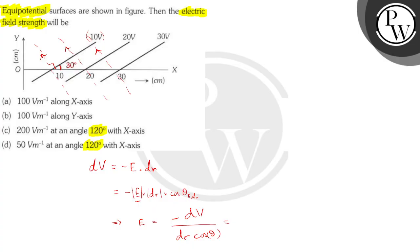So we have minus dV. What is the change, the small change in dV? Since it's a small value, we can say that it is delta V minus delta V divided by delta R cos of the angle between E and R. So delta V over here, let's take the delta V between the 10-volt surface and the 20-volt surface.